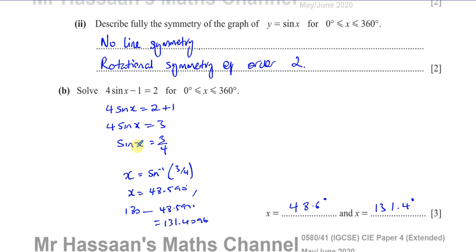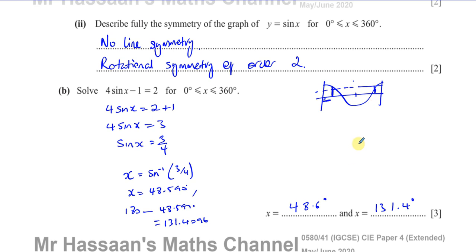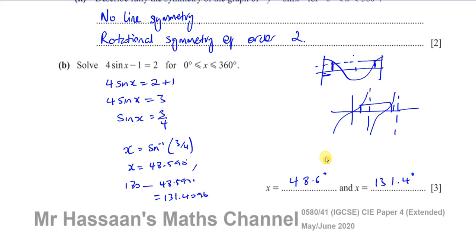For the cosine curve, it's inverse cosine of the ratio and then 360 minus that — because the cosine curve's symmetry runs at 180°, so 360 minus the calculator angle gives the other solution. For the tan curve, you simply find the first angle using the calculator and keep adding 180° until you're out of your range, because the tan curve just repeats every 180°.